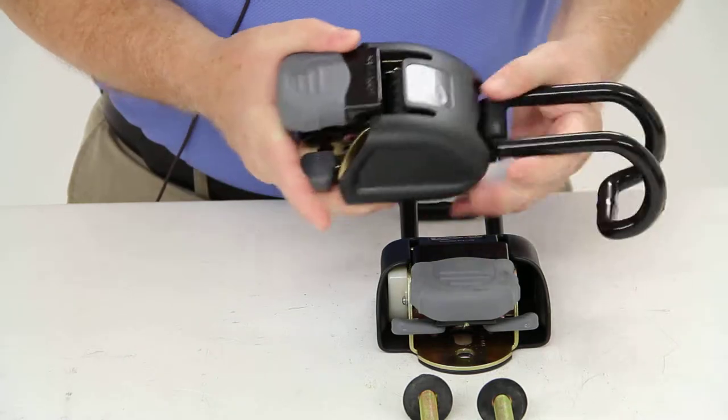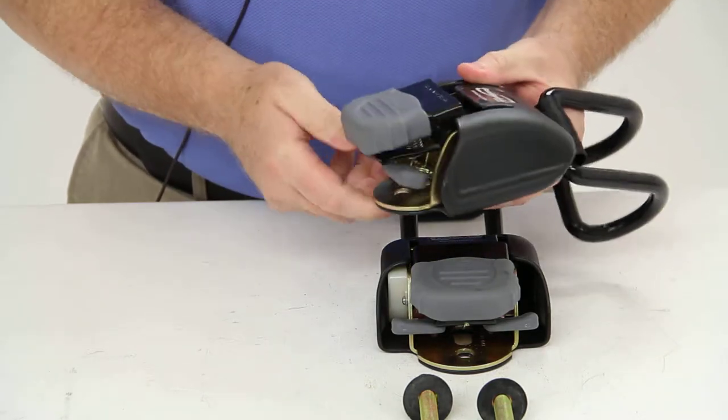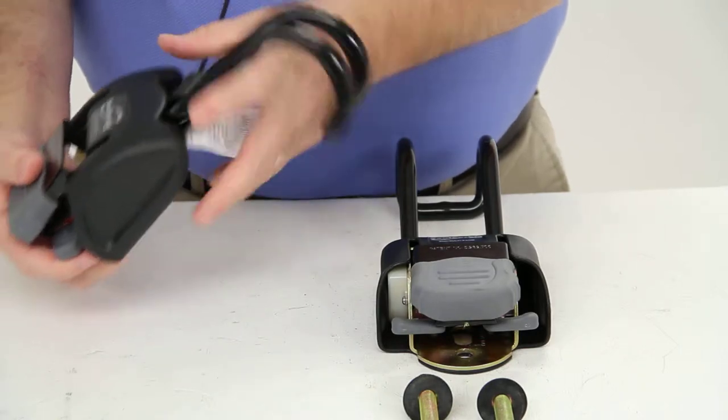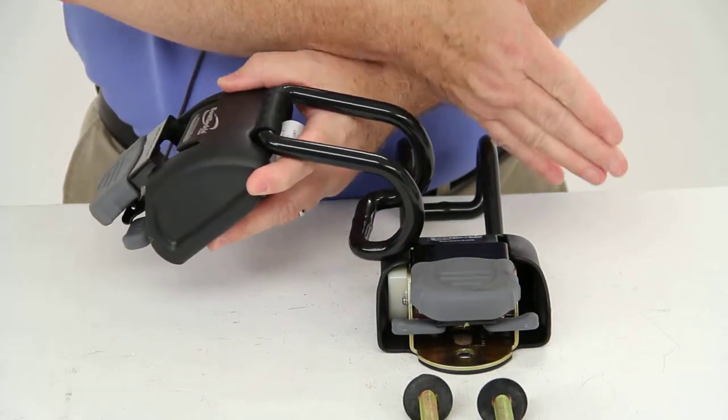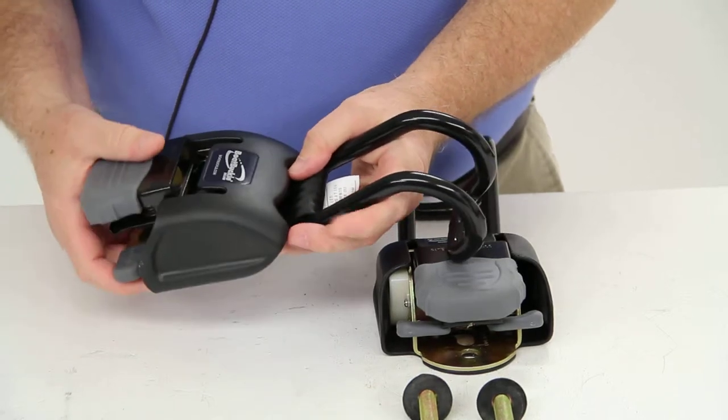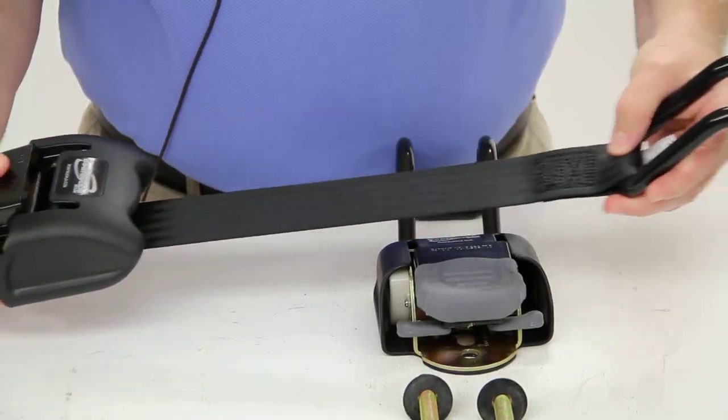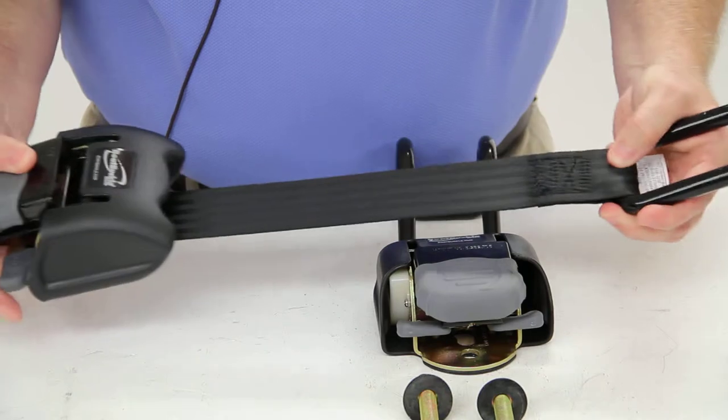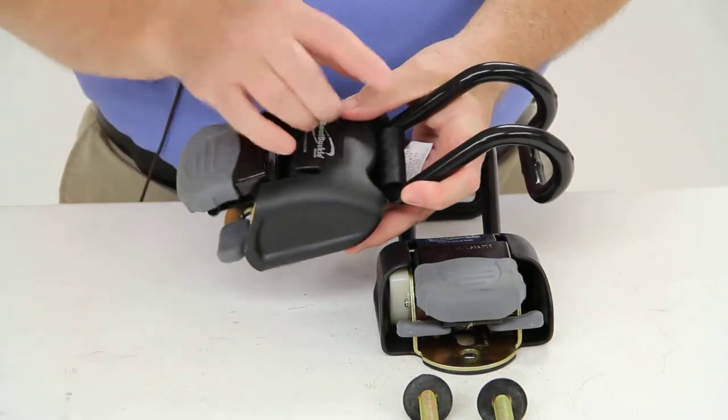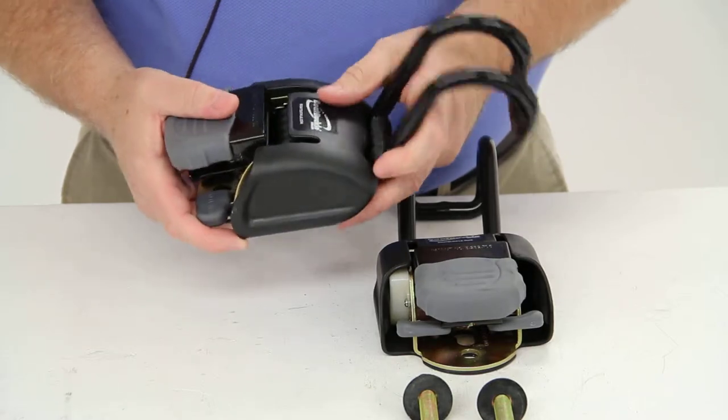And the way these would work is you would attach one of these on each side of the trailer. And then when you push the release lever down, the strap with the double J-hooks would extend out. And you would attach it to the gunwale on each side of the boat.